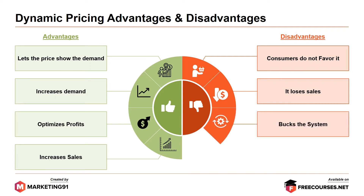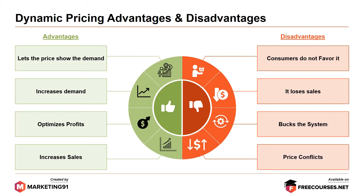This leads to many customers bucking the system. Savvy shoppers have figured out that dynamic pricing models are often used online. Finally, price conflicts: a business may lower the price of its product, which causes its competitor to lower it even further. This process continues until one business reaches a point where they cannot sustain themselves at the artificially low price.